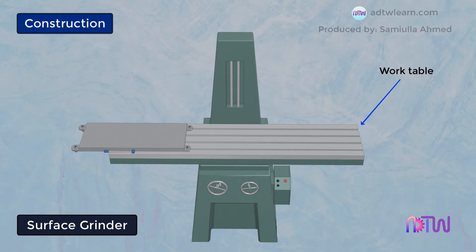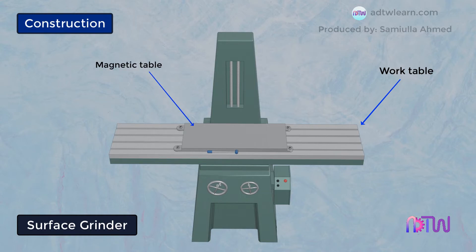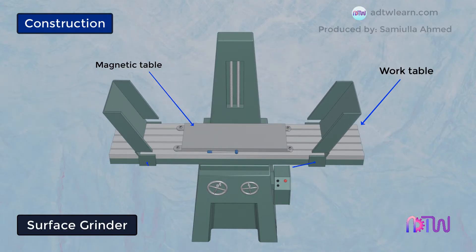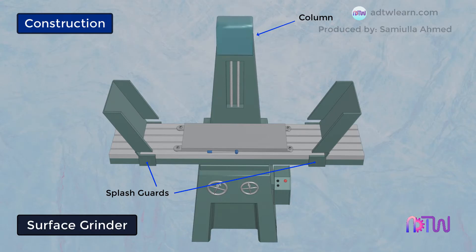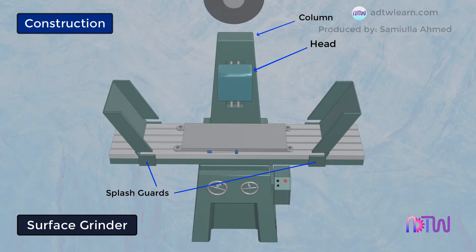The work table helps in holding the job which is to be ground. Above the work table there is a magnetic table which magnetizes and holds the workpiece in a fixed position. Splash guards prevent sparks from going out and hitting something beside the machine. There is a column inside which the driving mechanism is placed, and the grinding wheel head is connected to the column.